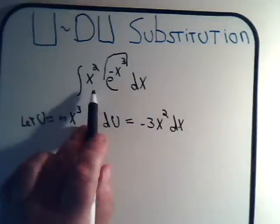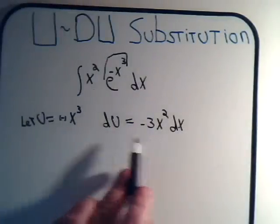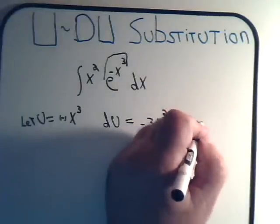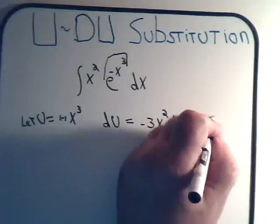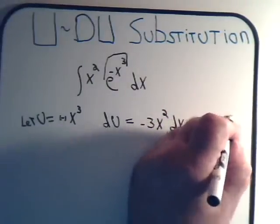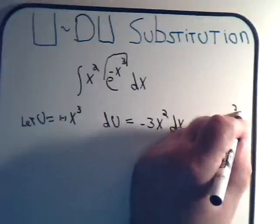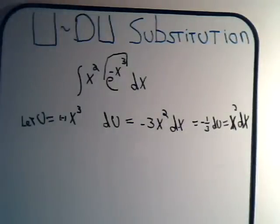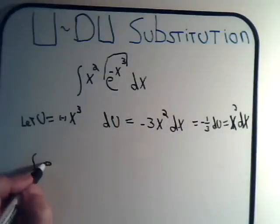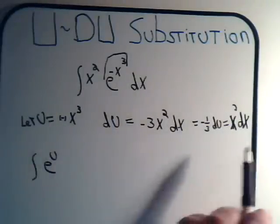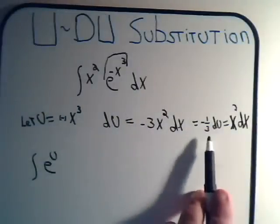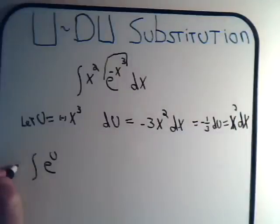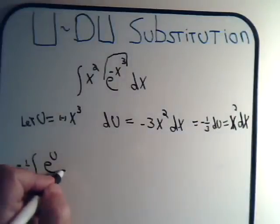So divide both sides, I have minus one-third DU equals x squared dx. Now we're all set up to go ahead and tackle the rest of the integral, so this would become e to the U, and x squared dx, that's minus one-third DU.